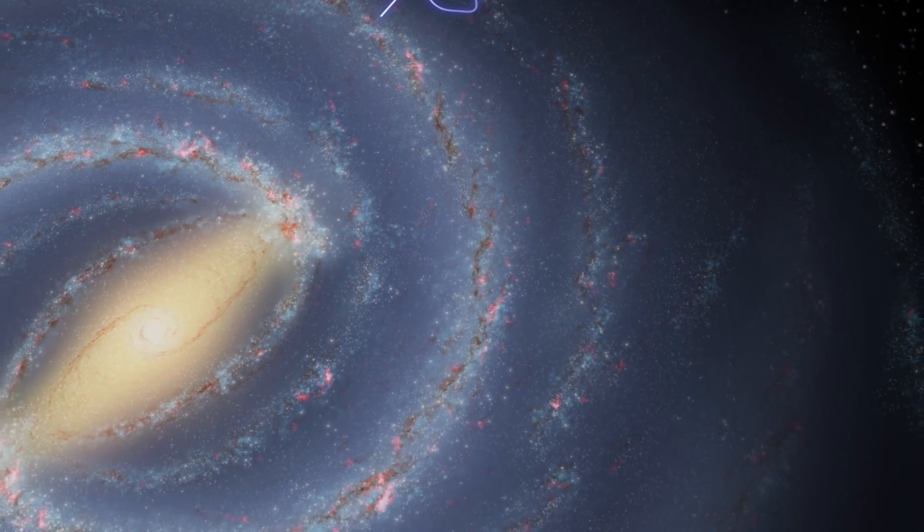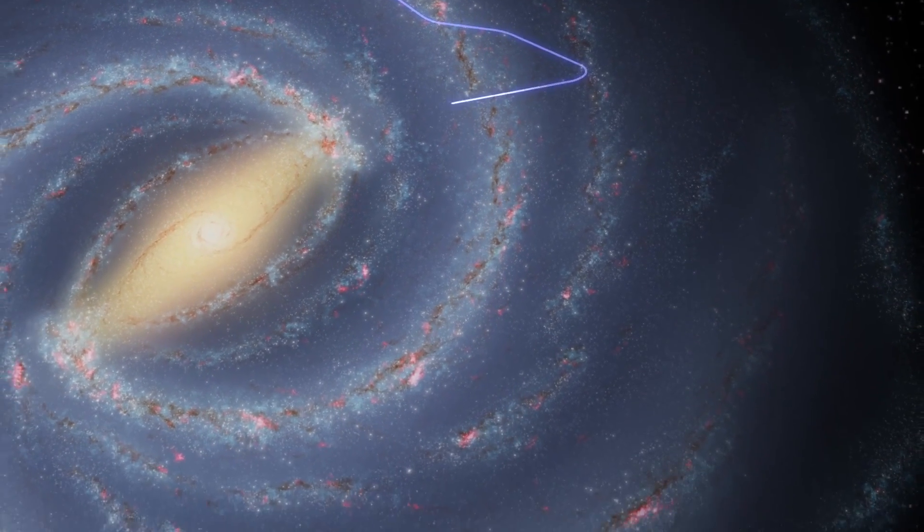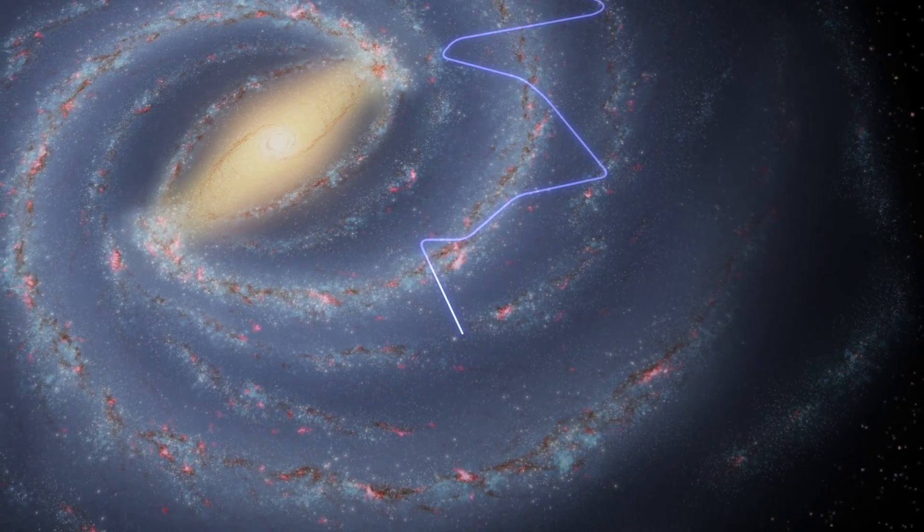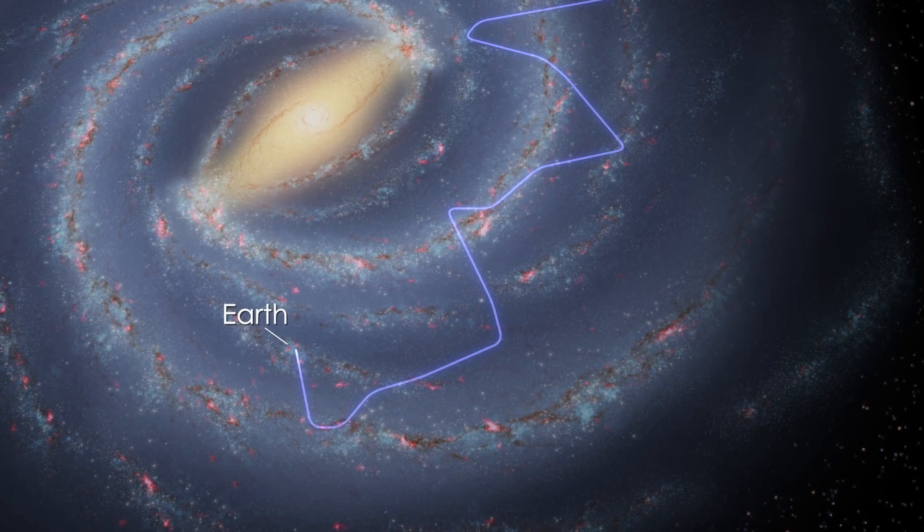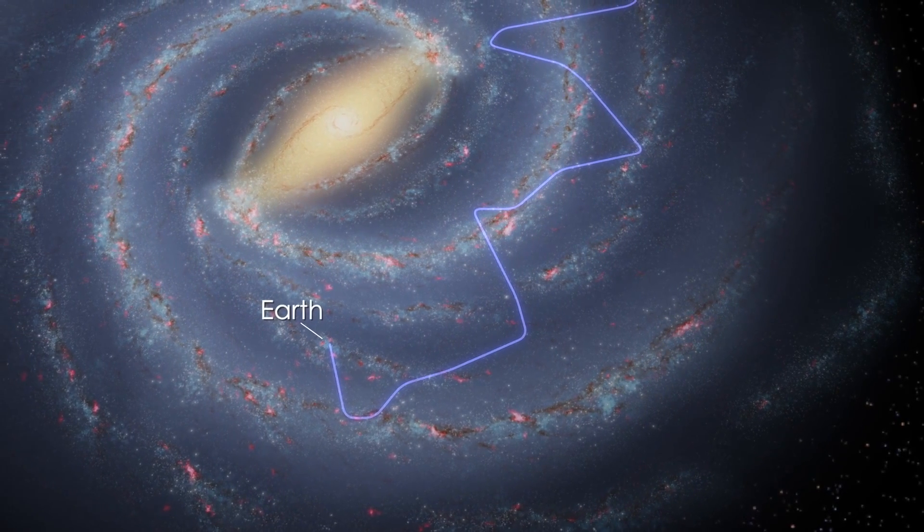Because cosmic rays are charged particles, they interact with magnetic fields as they travel. These interactions mean they don't follow a straight line from their sources, and so scientists can't trace where they came from.